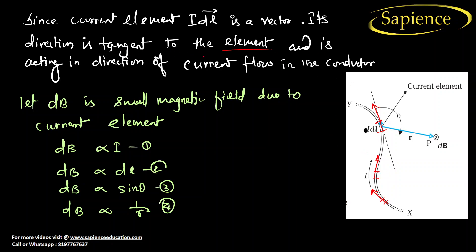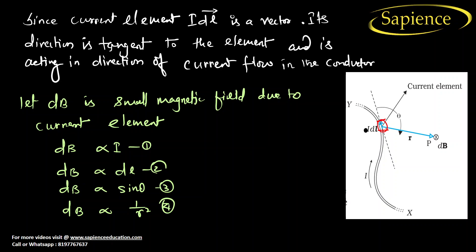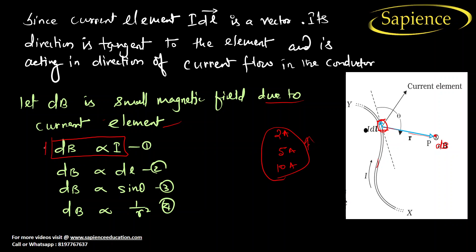The direction of idl is tangent to the element and acts in the direction of current flow in the conductor. There is a point P at which we want the magnetic field due to the current-carrying conductor. Let db be the small magnetic field due to the current element. db is proportional to the current I — if you increase the current from 2 to 5 to 10 ampere, the magnetic field will increase.